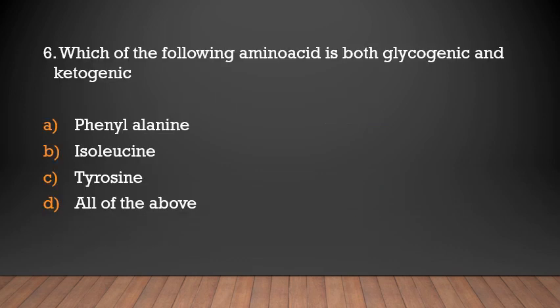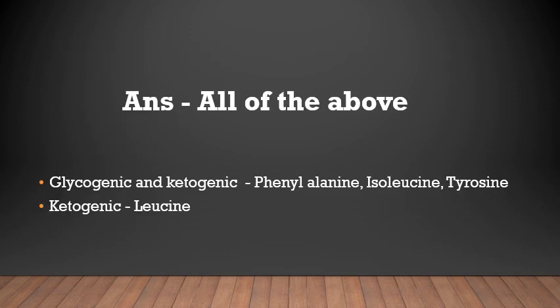Question: Which of the following amino acids is both glycogenic and ketogenic — phenylalanine, isoleucine, tyrosine, or all of the above? Answer: All of the above. Both glycogenic and ketogenic amino acids are phenylalanine, isoleucine, and tyrosine. The purely ketogenic amino acid is leucine.